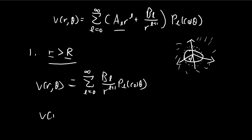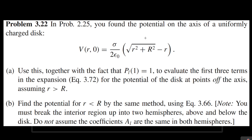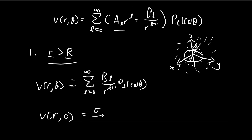Next, we're given the condition that when theta equals zero — that is, on the z-axis — the potential equals a specific expression which we found in the previous chapter. Let's copy that expression down so we can use it for comparison.